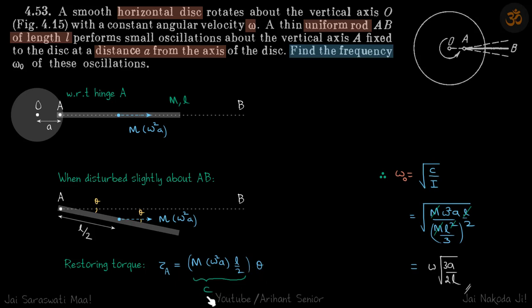This is the value of C for our compound pendulum, and we know that frequency of oscillation is root C by I. So we put the value of C here, and I with respect to A is ML square by 3. Simplify that and this will be our answer.